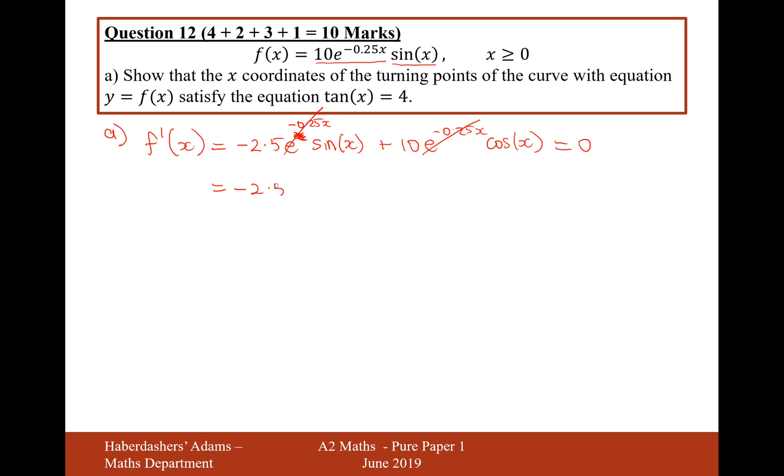It's then minus 2.5 sin x plus 10 cos x. So we've now got this equation that equals 0. So, what I suggest we can probably do is move the minus 2.5 sin x onto the other side, so that would be 10 cos x equals, and then add the 2.5 sin x onto the right-hand side.